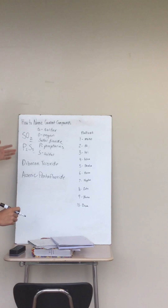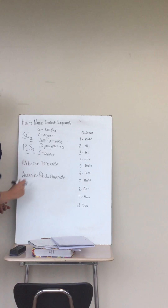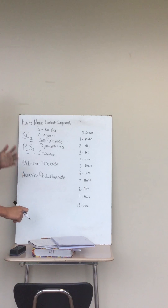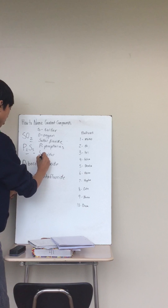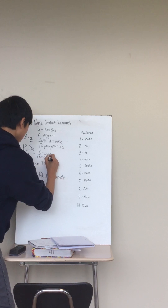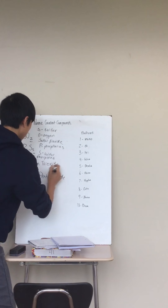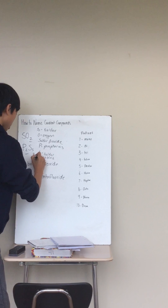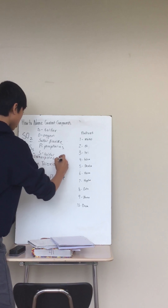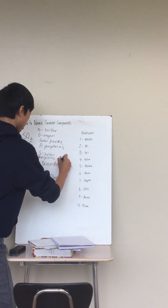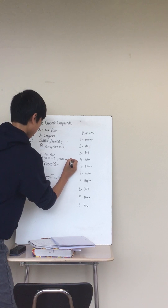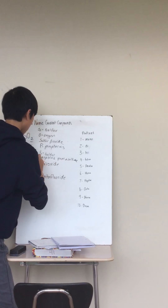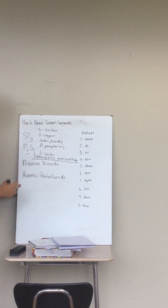You have to pay attention to the numbers 2 and 5, because when you write out the name: because there's a 2, it would be diphosphorus, and then penta because 5 — penta-sulfide. So the final answer for this compound would be diphosphorus pentasulfide.